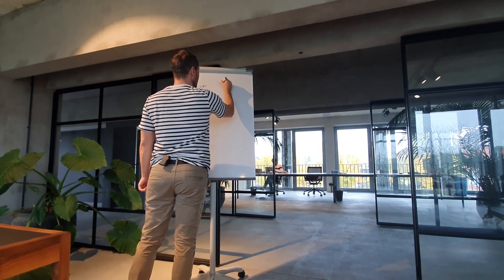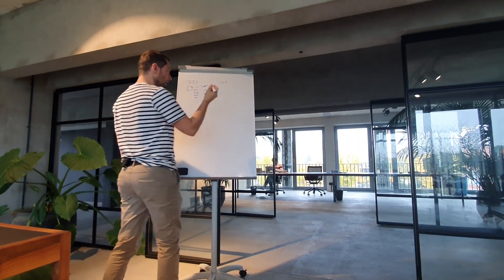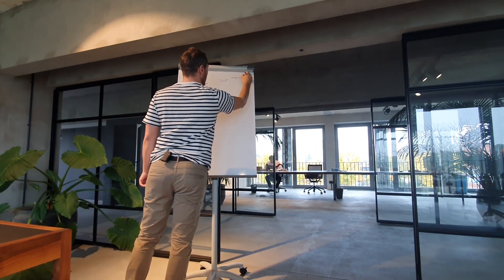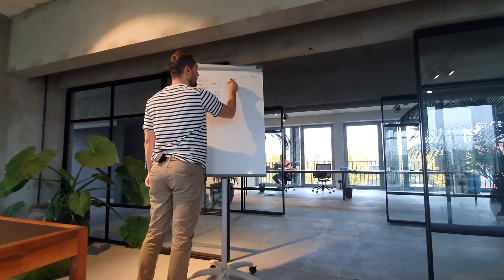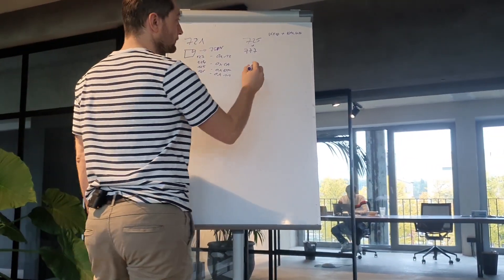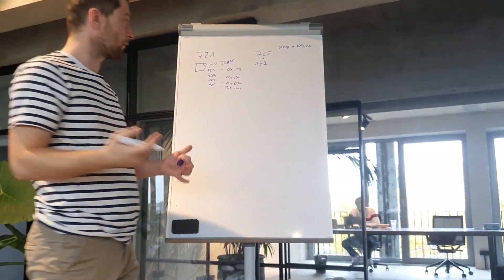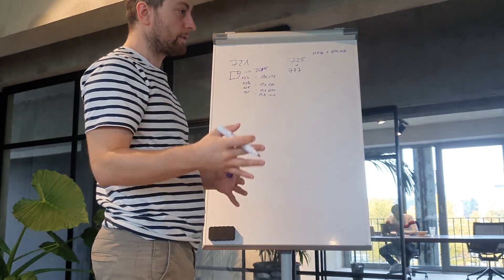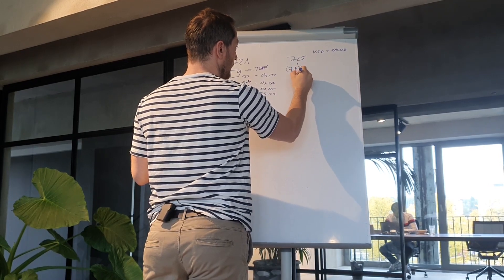What this basically means is we have an ERC-725 contract which has a key-value store that can attach information. We have a combination where we attach a 777, and the 777 is literally the same as an ERC-20 but with some extra features — though I won't go into that detail. You could assume that a 777 is like an ERC-20.